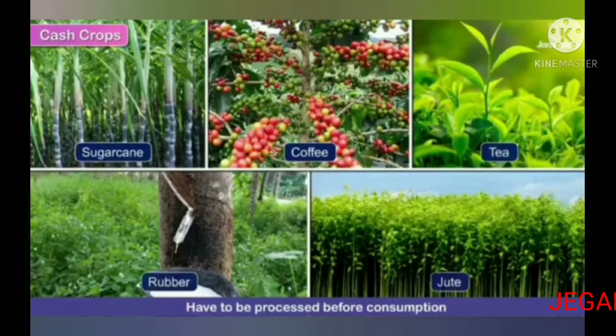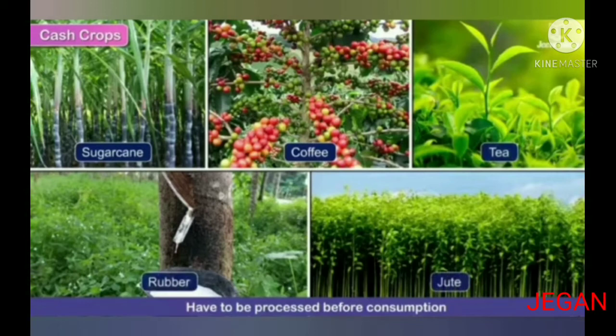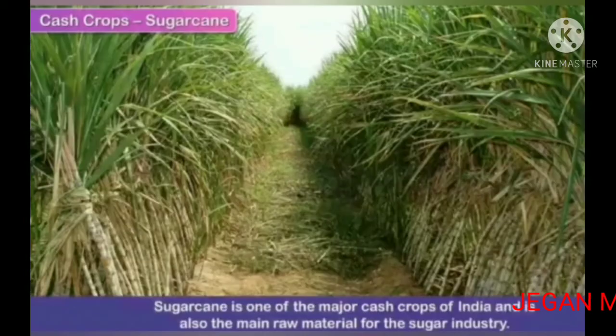Cash crops such as sugarcane, coffee, tea, rubber, and jute have to be processed before consumption.